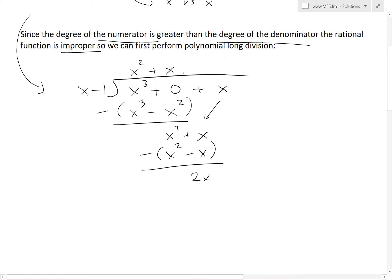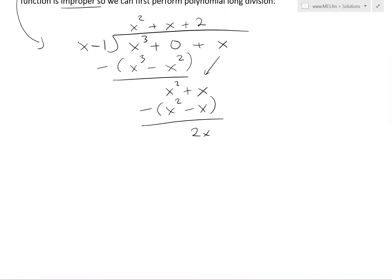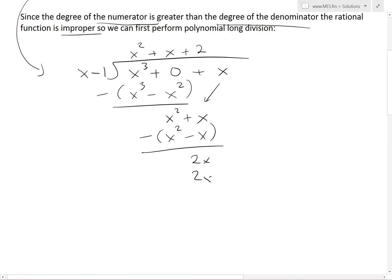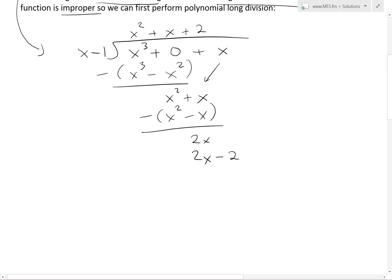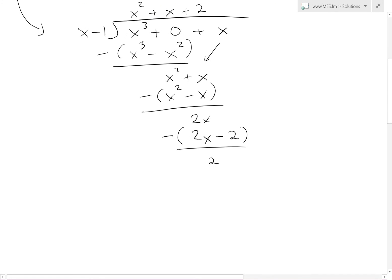To get 2x, we multiply by 2. So 2 times x is 2x, and 2 times -1 is -2. We subtract: the 2x terms cancel, leaving us with 2. Since we can't multiply x by anything to get a constant 2, this is the remainder.